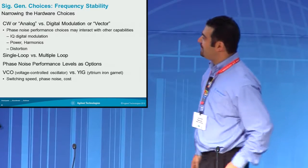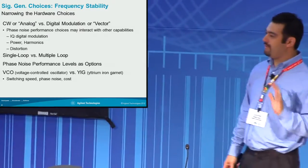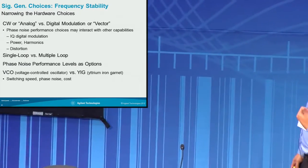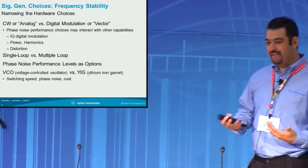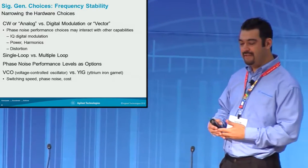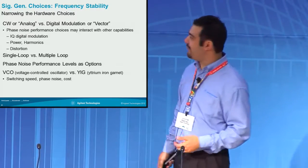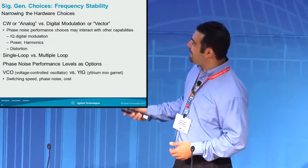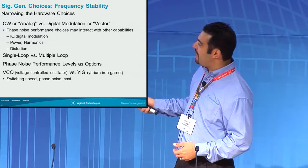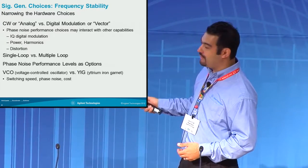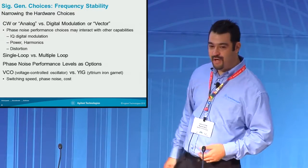Narrowing the hardware choices — that's a quick overview of where phase noise is coming from. But when you're choosing a signal generator, there are things that affect each one of those categories. For example, we have a lot of signal generators out there that have both analog only or digital modulation as well.